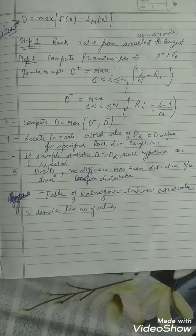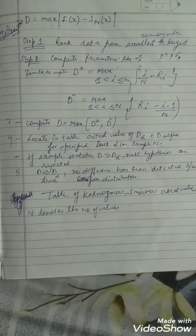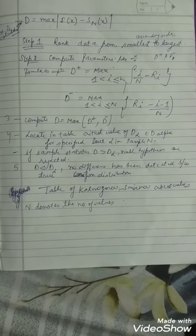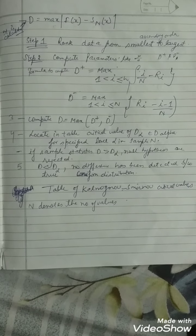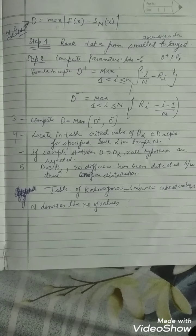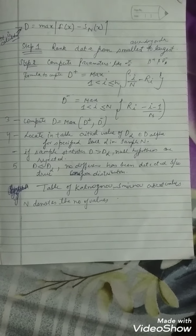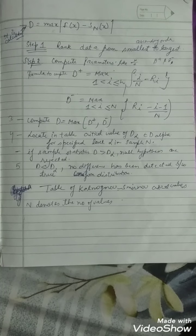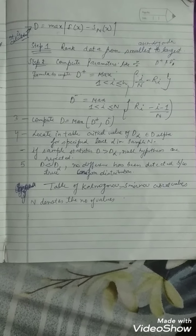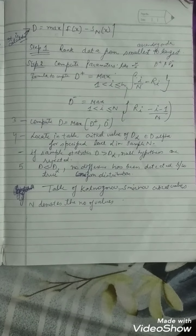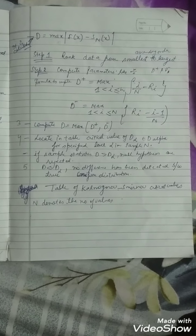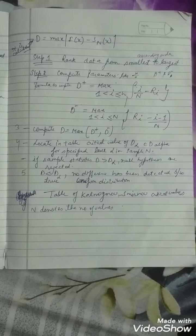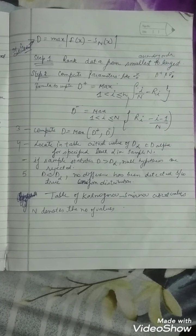These are the steps to compute using the KS method. In step one, rank the values in ascending order. In step two, compute the parameters D-positive and D-negative. The formula for D-positive is i/n minus r_i, where i is between 1 and n. The formula for D-negative is r_i minus (i minus 1)/n. In step three, compute D as max(D-positive, D-negative). In step four, locate the critical value of D-alpha from the table for the specified level alpha and sample size n.